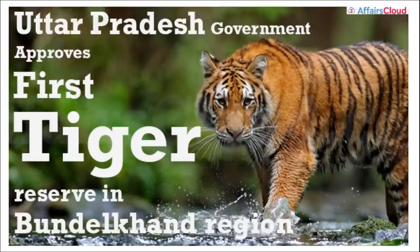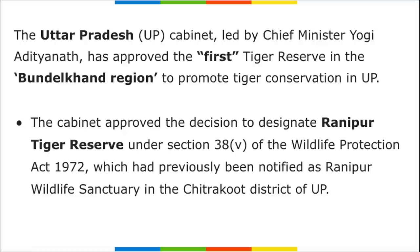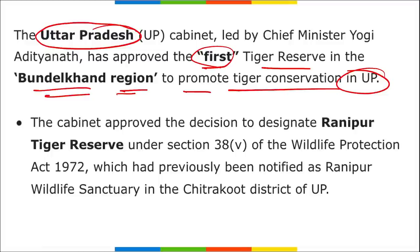Next: the Uttar Pradesh government has approved the first tiger reserve in the Bundelkhand region — highly important. Remember: the Tiger Protection Act came in 1973, and in 1973 the Chipko Movement was also launched. The UP government approved this tiger reserve to promote tiger conservation in Uttar Pradesh.